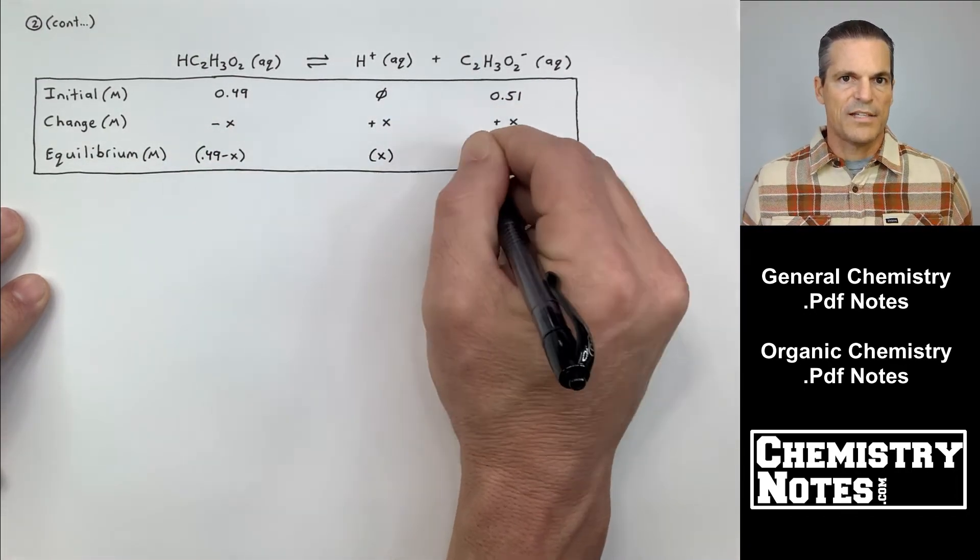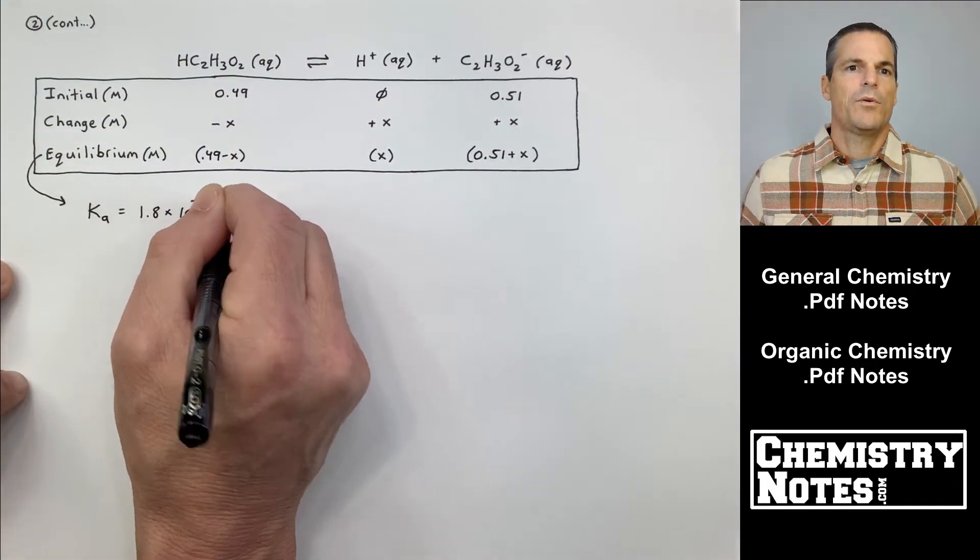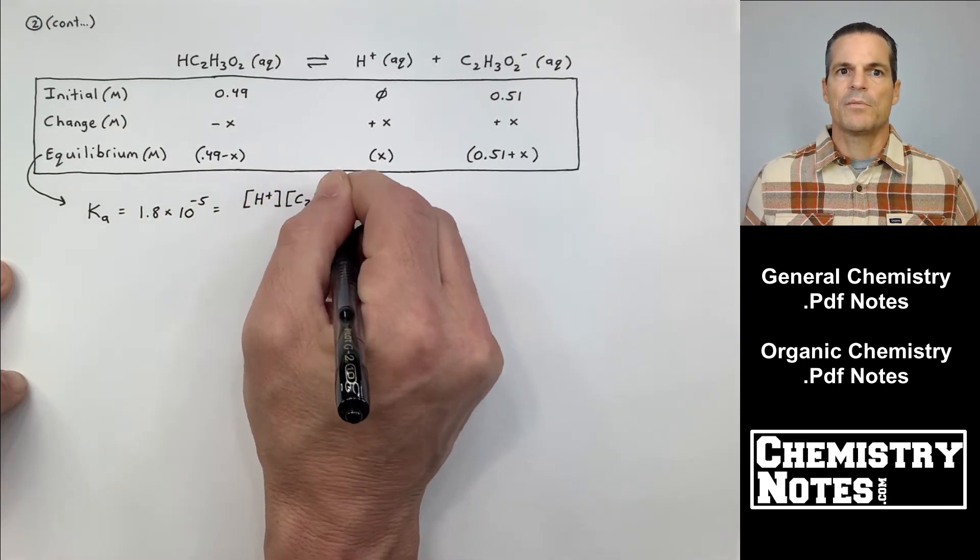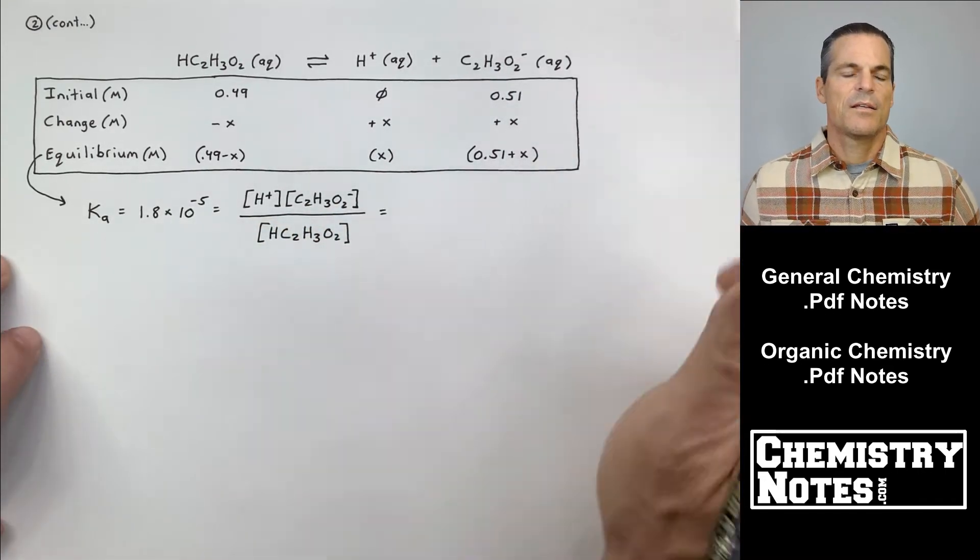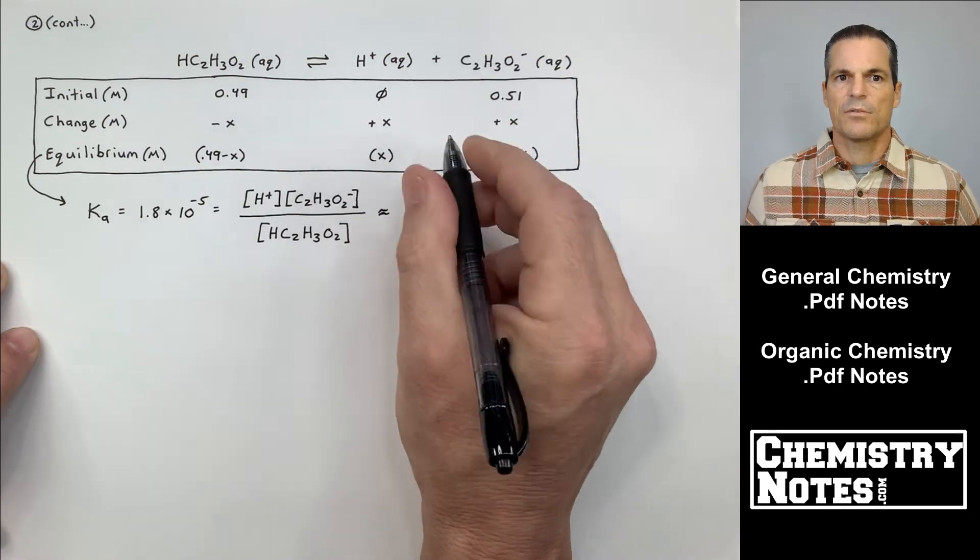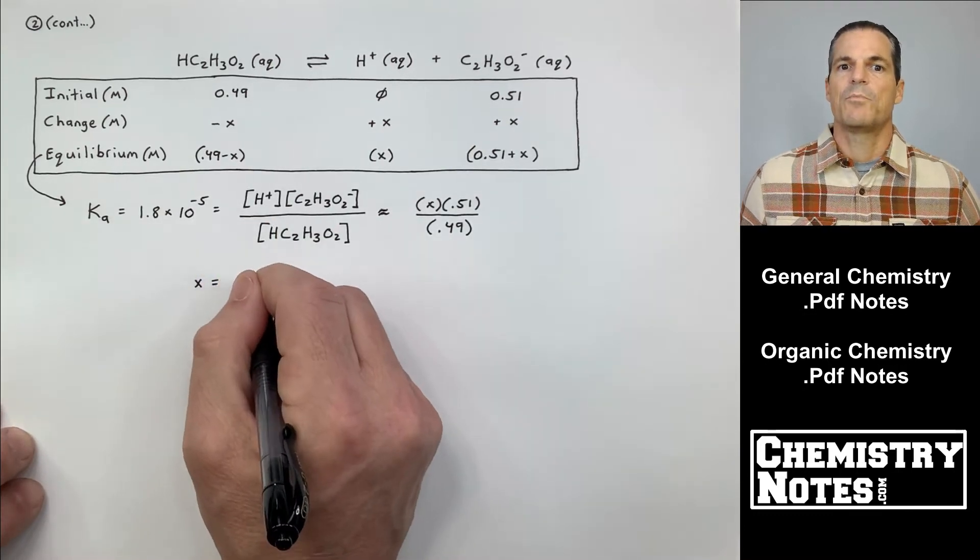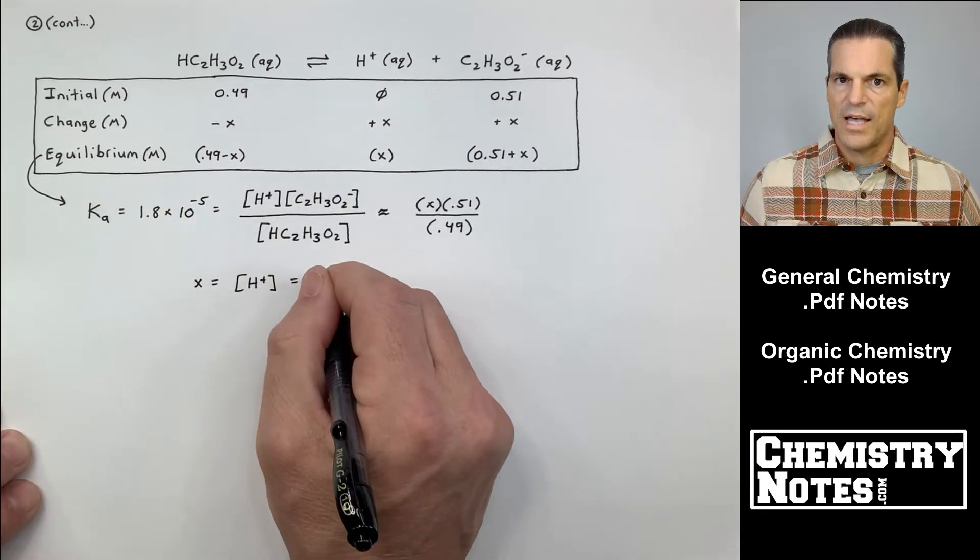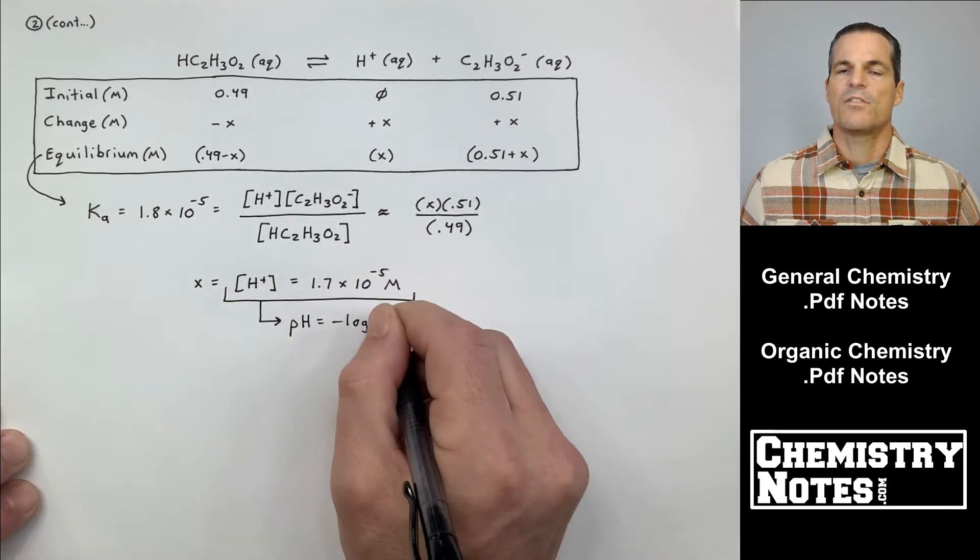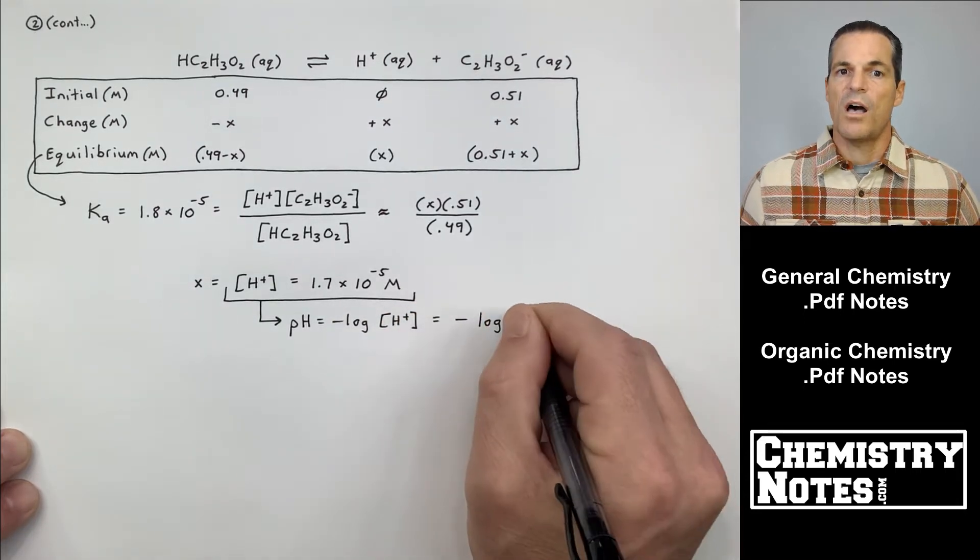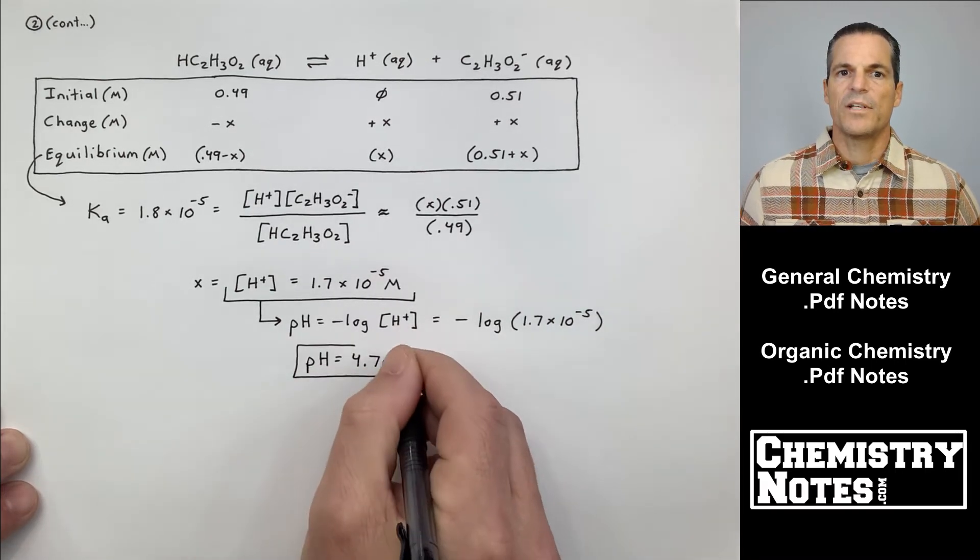We've really kind of taken out the power of it all, haven't we? So we do our minus x's, our plus x's. Equilibrium is 0.49 minus x for acetic acid, 0.51 plus x for acetate. Ka is 1.8 times 10 to the minus 5th equals concentration of products over the concentration of reactants, which is roughly equal to x times 0.51 all over 0.49. So x is equal to H+, which is equal to 1.7 times 10 to the minus 5th molar. pH equals minus the log of H+, or minus the log of 1.7 times 10 to the minus 5th. My pH is 4.76.